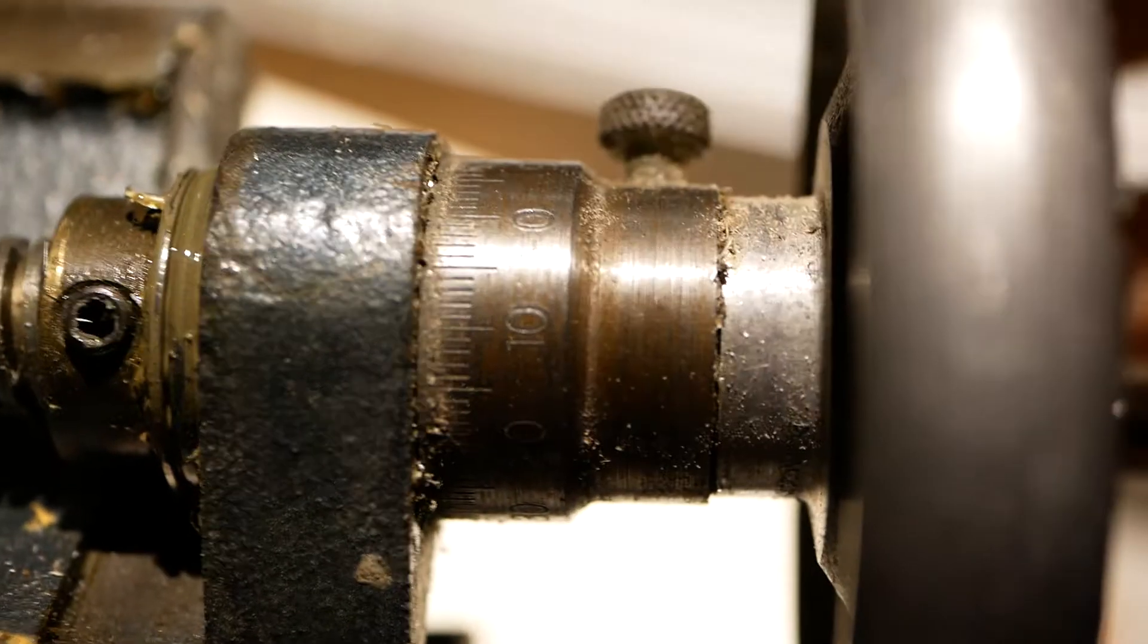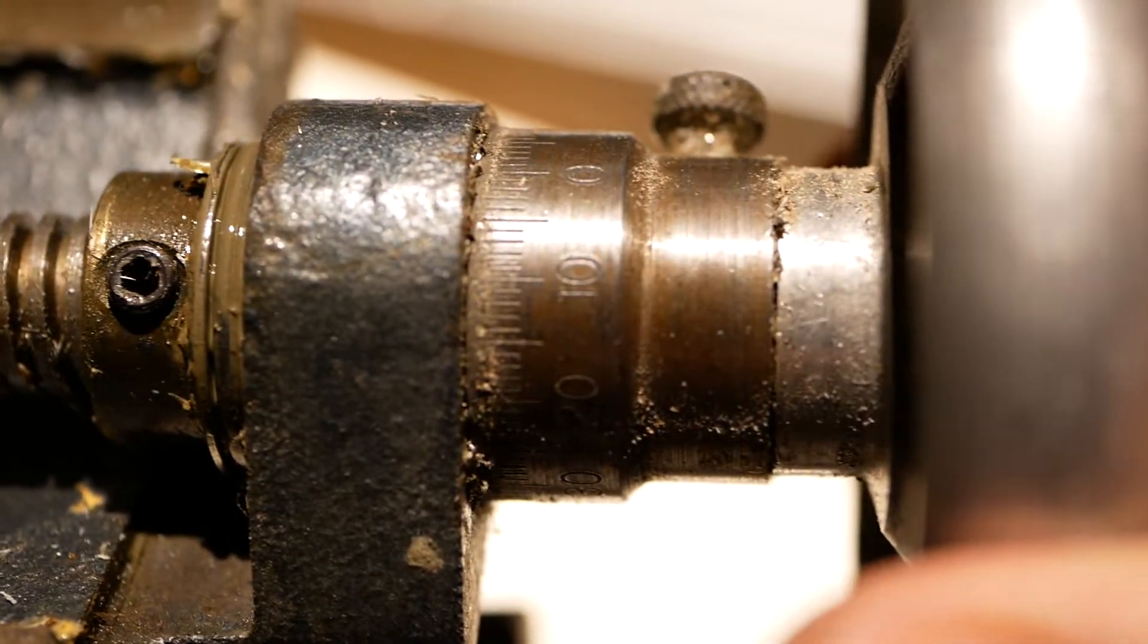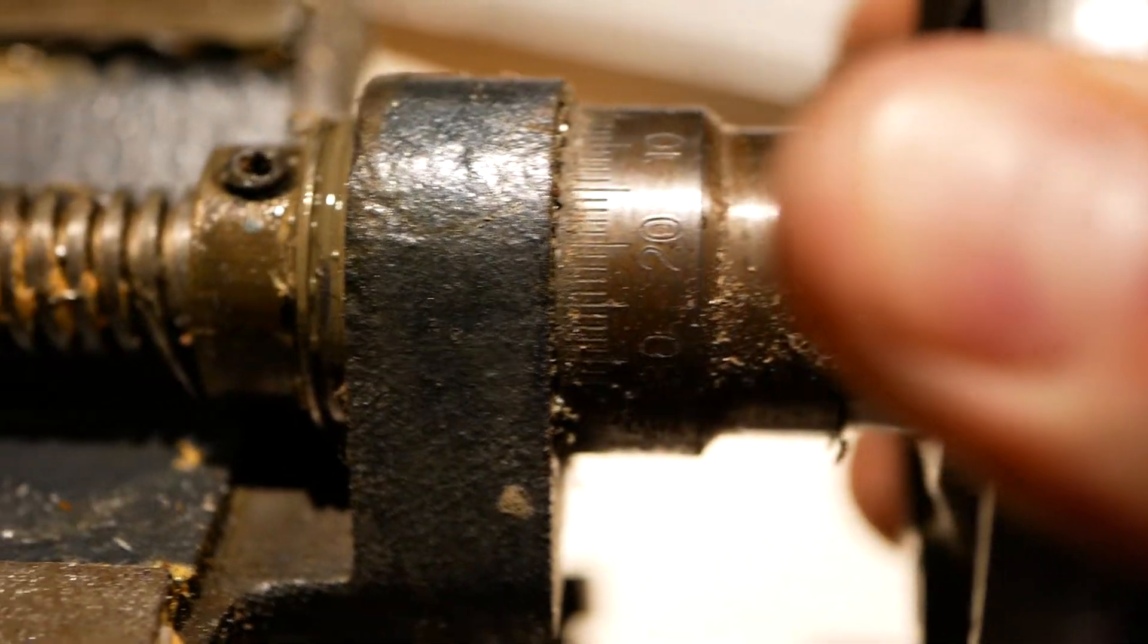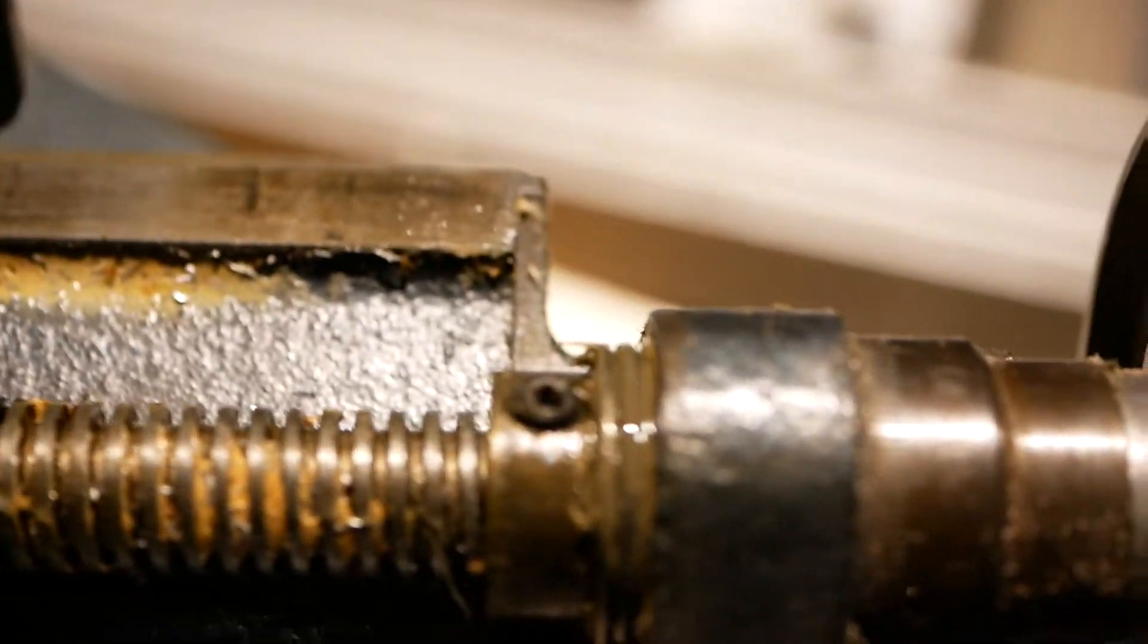I want that to be zero. And then I want to turn fifteen thousandths from there or whatever. You can't do that with the Chinese style because that increment ring is fixed. It's the retainer that holds all of this nonsense together.